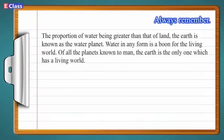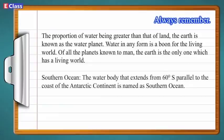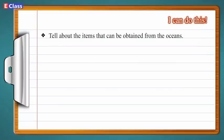Always remember: the proportion of water being greater than that of land, the earth is known as the water planet. Water in any form is a boon for the living world. Of all the planets known to man, the earth is the only one which has a living world. The Southern Ocean is the water body that extends from 60° south parallel to the coast of the Antarctic continent. I can do this: tell about the items that can be obtained from the oceans, tell the importance of oceans, and tell issues related to oceans.